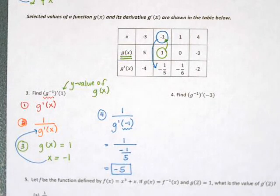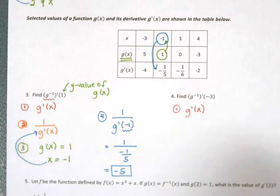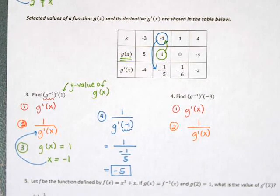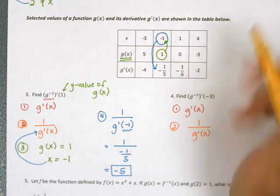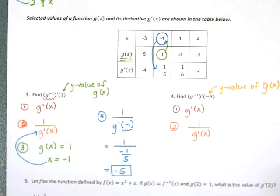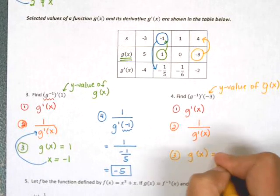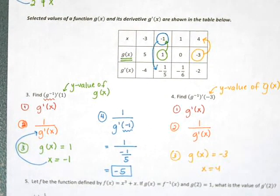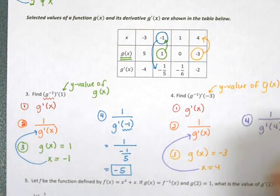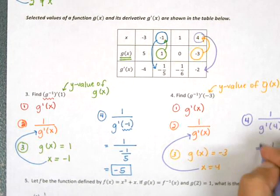Problem 4: find the derivative of the inverse of g at −3. Step 1: the derivative of the original is g′. Step 2: 1 over g′. Step 3: find what x makes g(x) = −3 — looking at the table, g(x) = −3 when x = 4. Step 4: plug in 4 — so 1 over g′(4). From the table, g′(4) = −2, so the answer is 1 over −2.